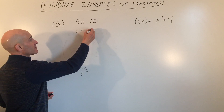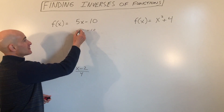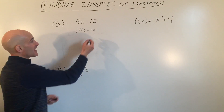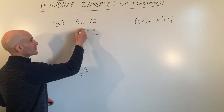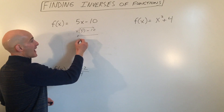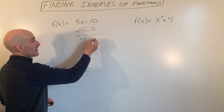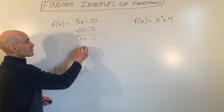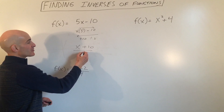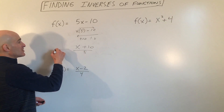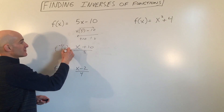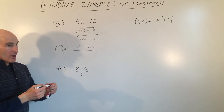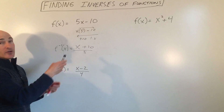So we'll write times 5, minus 10 — multiplying by 5 and subtracting 10. Now if you wanted to reverse that going in the other direction, you're going to add 10 first and then divide by 5. So your equation would be: take x, add 10 first, and divide by 5. This would be your inverse function, f to the minus 1. This represents the inverse function. That's one way to do it, just intuitively.